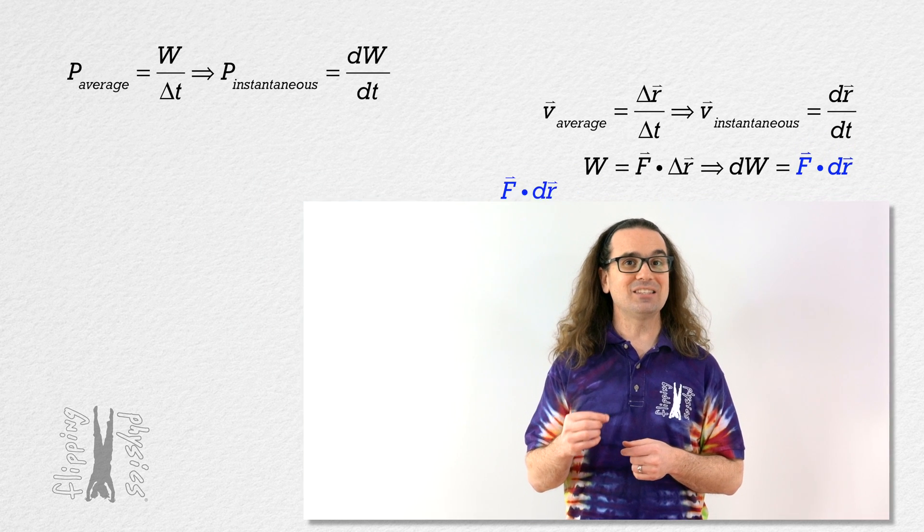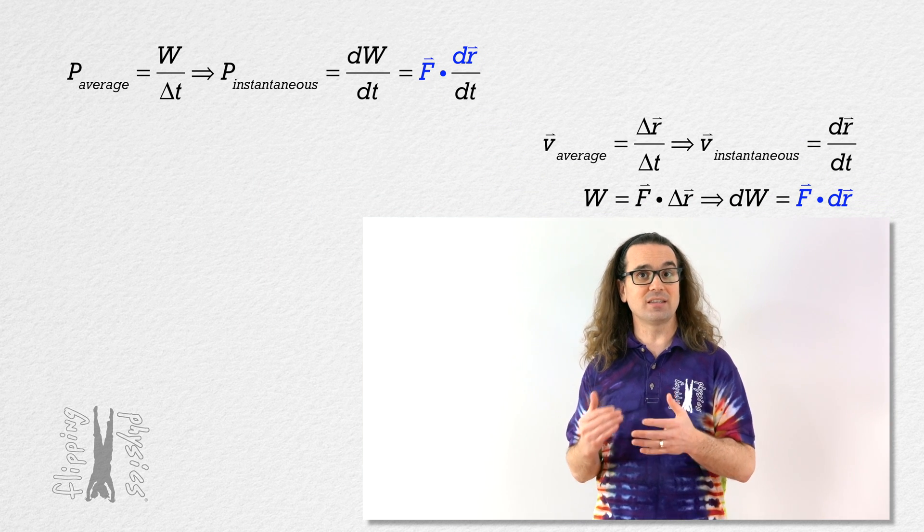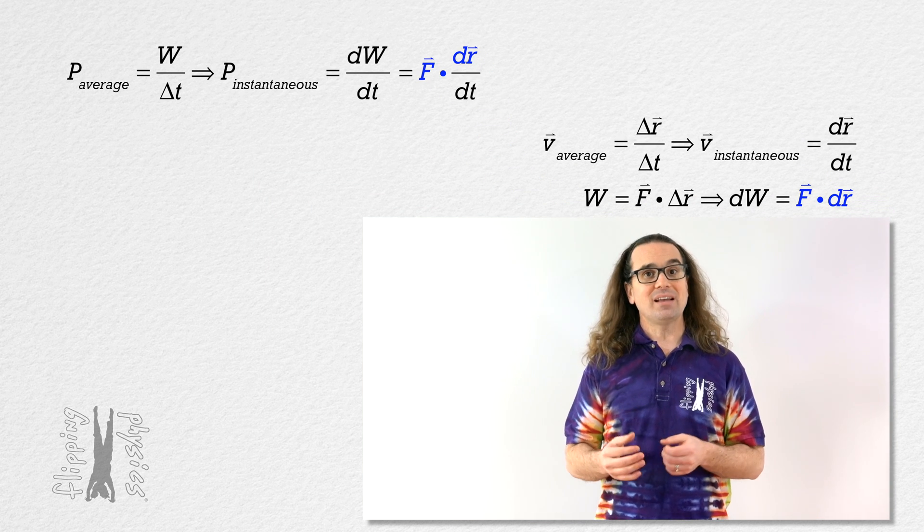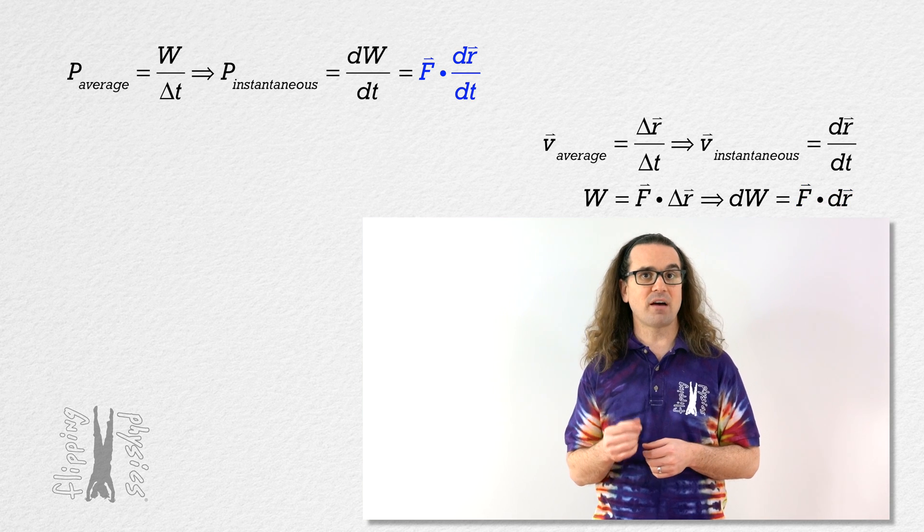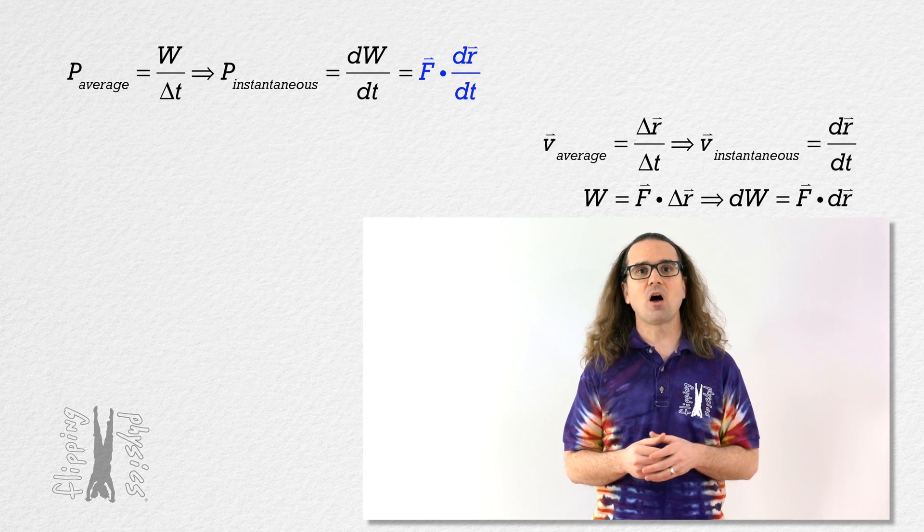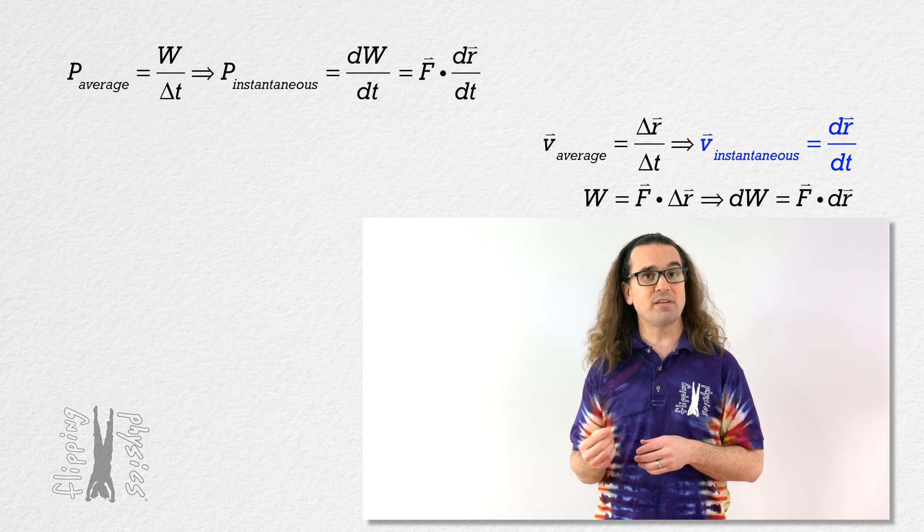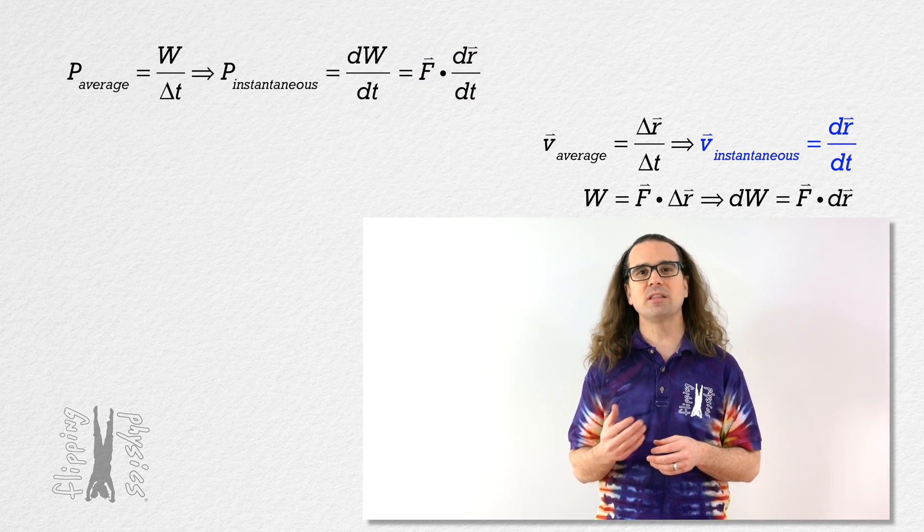We can substitute that into our equation for instantaneous power. We get that instantaneous power equals the dot product of force and the derivative of position with respect to time. And Billy already pointed out that the derivative of position with respect to time equals velocity.